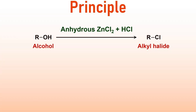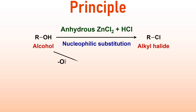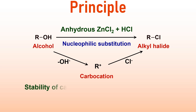Now let us discuss the underlying principle. When alcohols react with LUCAS reagent, they undergo nucleophilic substitution, replacing the OH group with a chloride ion. This reaction involves two key steps. The first step involves the departure of the OH group to form a carbocation. The carbocation then combines with a chloride ion to form an alkyl chloride. The rate of reaction depends on the rate of formation of the carbocation, which in turn depends on the stability of the carbocation.